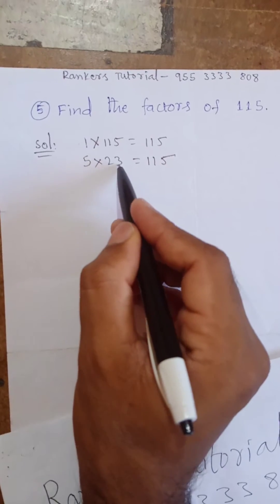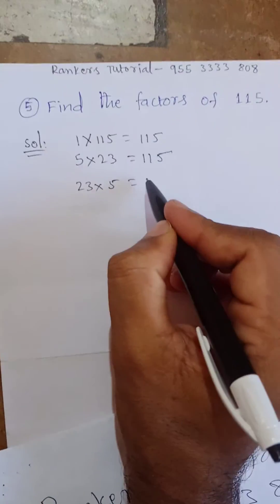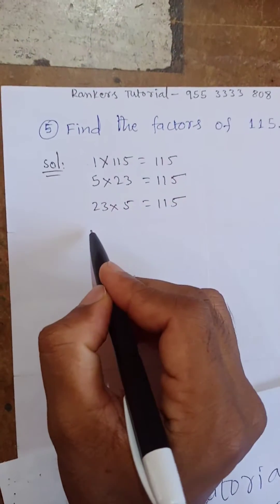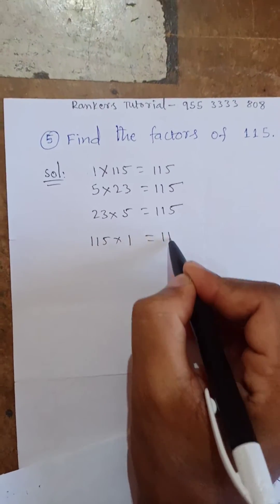Next, reverse, you write here 23 into 5 equals 115. Next, 115 into 1 equals 115.